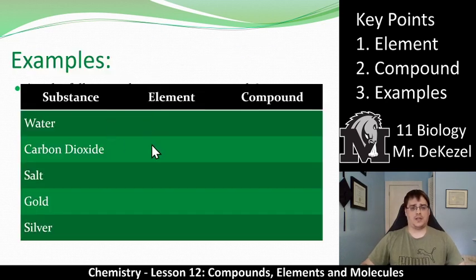So some examples here. So the substance is water. Is that an element or a compound? Water is made up of hydrogen and oxygen. So it is a compound. So we would mark off that column. We have carbon dioxide. So that's carbon and oxygen. So again, that's a compound. We talked about salt being NaCl. So that's two elements. Again, that's a compound.